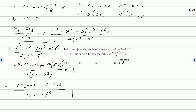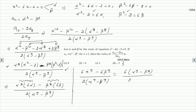Simplifying further, the numerator becomes 6 times (alpha to the power 9 minus beta to the power 9). Taking 6 common from the numerator and the denominator has twice of (alpha to the power 9 minus beta to the power 9). The (alpha to the power 9 minus beta to the power 9) terms in numerator and denominator cancel out, leaving 6 divided by 2, which equals 3. This is the correct answer.